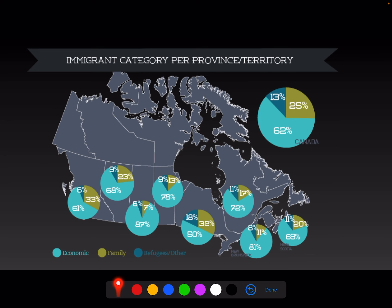What you're seeing is economic, family, and refugee categories. You'll notice that in all provinces economic immigration is always the highest. Some refugees and family class are a little bit more or less depending on the province. Here in Alberta we've got 68%, 23%, and 9%; overall Canada is 62%, 25%, and 13% — fairly similar to what's going on through the rest of Canada.